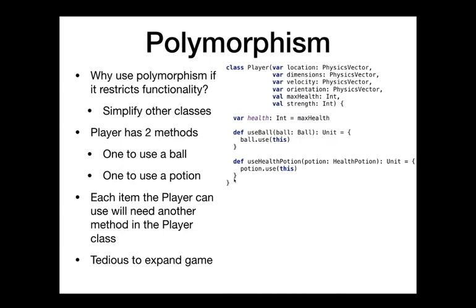Recall when we wrote the Player class, we had two methods: useBall taking a Ball, and useHealthPotion taking a HealthPotion. The definitions are effectively identical. But once we start adding more types — more objects the player can interact with — we'd have to edit the Player class every single time, adding a new method for each type. We might end up with 10, 15, 20 methods. This can get very painful as your game grows.